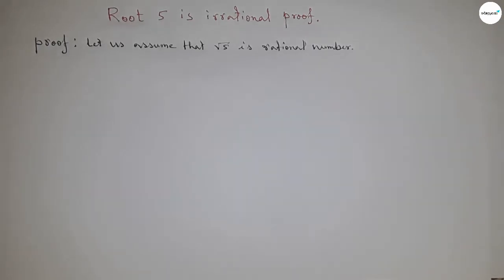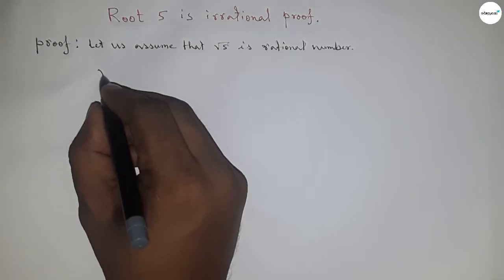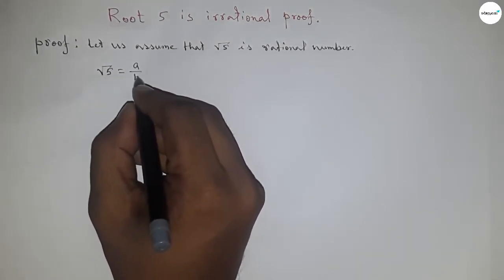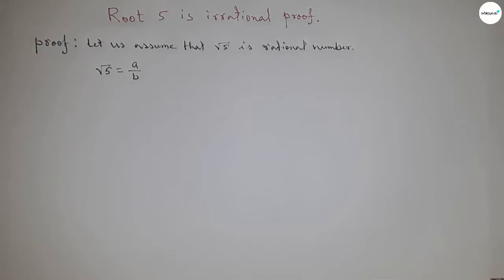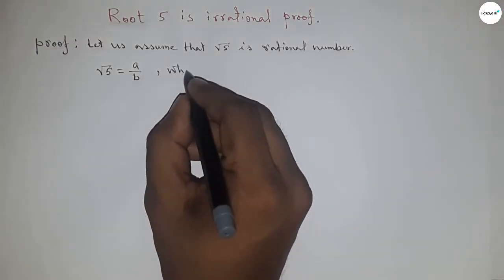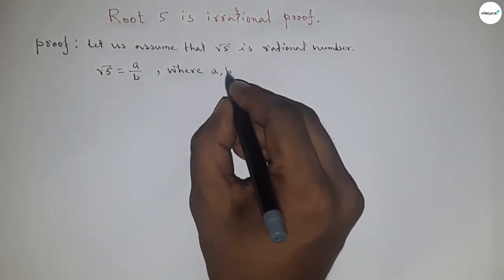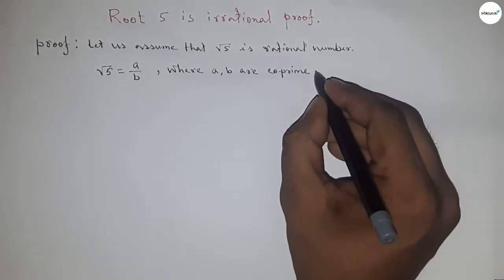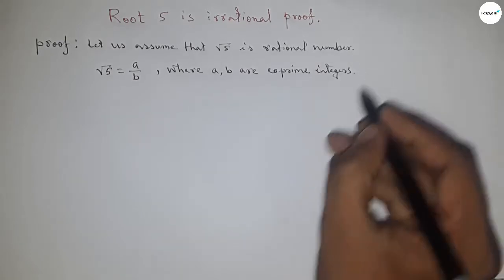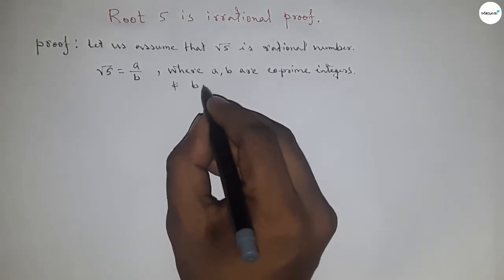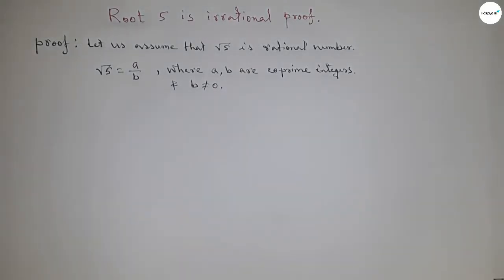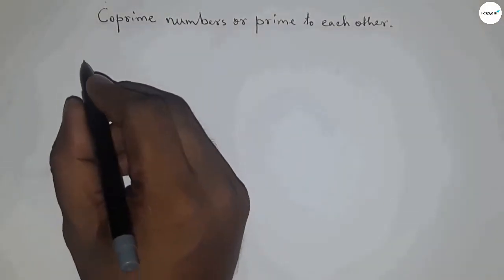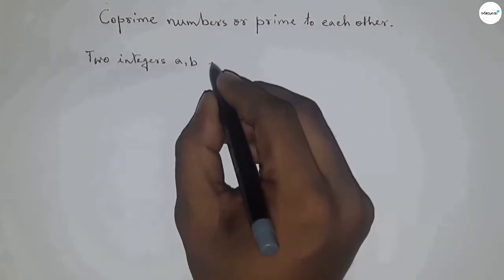Since we assume √5 is a rational number, we can write √5 = a/b, where a and b are co-prime integers — that is, prime to each other — and b is never equal to 0. I will discuss co-prime in this video.